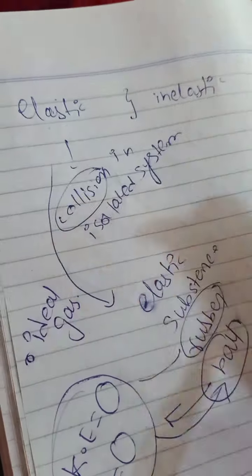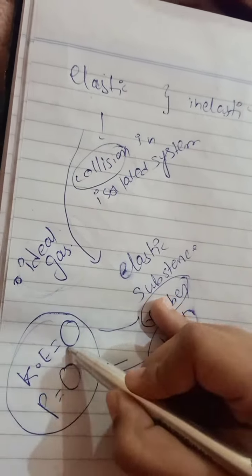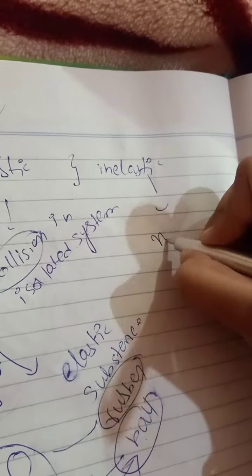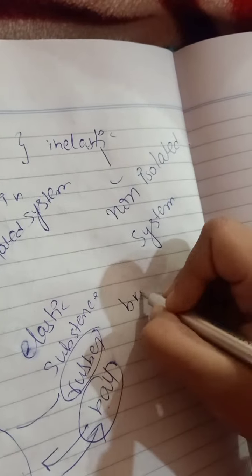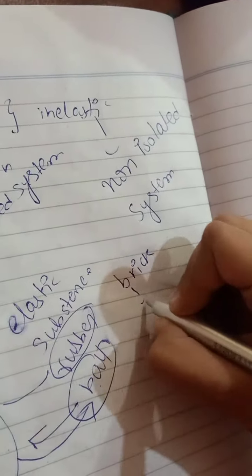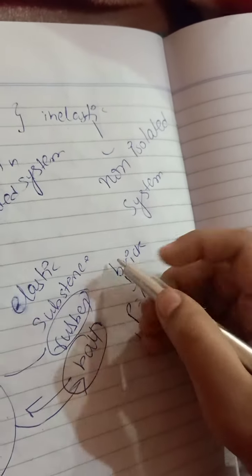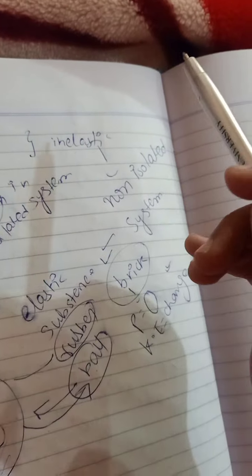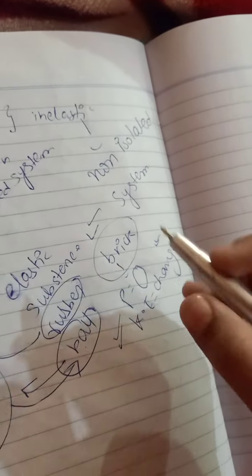The example of elastic motion is ideal gases. In ideal gases the kinetic energy and momentum are not changed. If you talk about inelastic, it is the opposite of elastic — it occurs in a non-isolated system. For example, if a brick strikes a wall, it will not come back. So here the momentum will be equal to zero but their kinetic energy will change, because the brick is not moving backward after striking the wall.